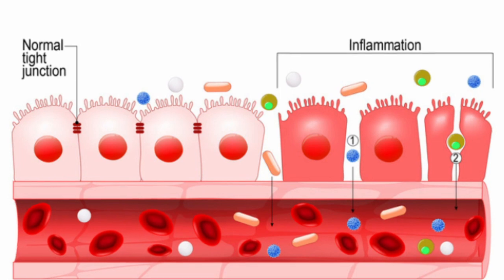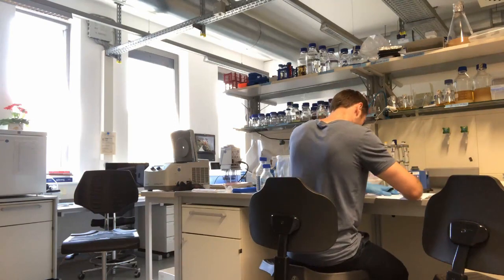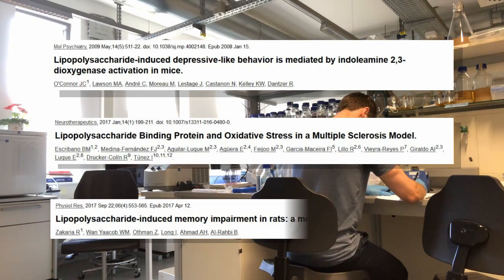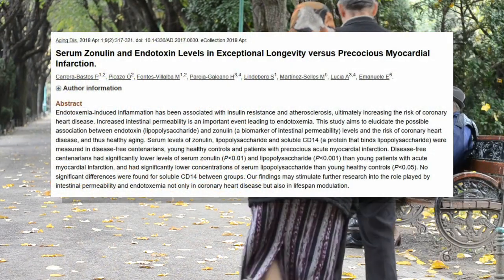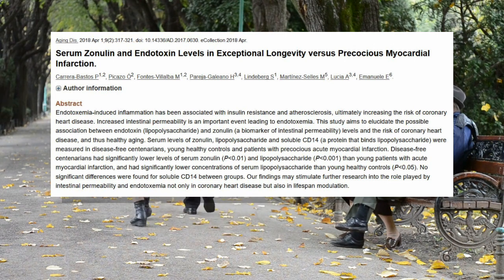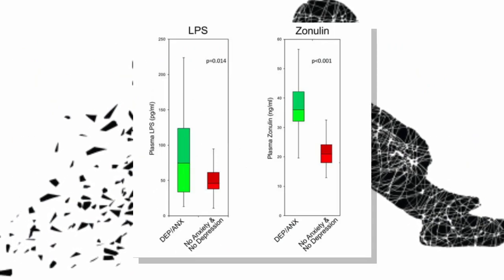But once your gut cell wall becomes leaky, LPS can flush in. We frequently use LPS in the laboratory to induce an immune reaction — it can literally be used to induce any kind of disease, ranging from depression or multiple sclerosis to Alzheimer's. A very interesting paper recently found that healthy centenarians had significantly lower blood LPS levels compared to unhealthy young controls. Another study published in the journal Gut found that increased intestinal permeability correlates with high blood LPS levels, and that people with depression have significantly higher levels of blood LPS.